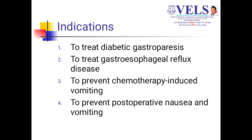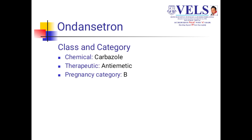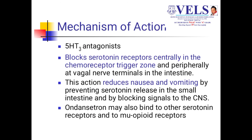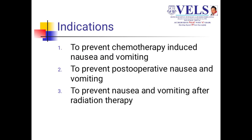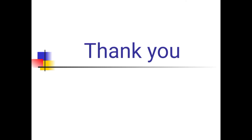Indications for metoclopramide include diabetic gastroparesis, GERD, chemotherapy-induced vomiting, and post-operative nausea and vomiting. The next compound is ondansetron. It acts on 5-HT3 receptors and blocks them, thereby acting on serotonin receptors on the CTZ zone. This action reduces nausea and vomiting by preventing serotonin release in the small intestine and blocking CNS signals. Ondansetron may also bind to serotonin and mu-opioid receptors. Indications: chemotherapy-induced nausea and vomiting, post-operative nausea and vomiting, and nausea and vomiting after radiation therapy. Thank you.